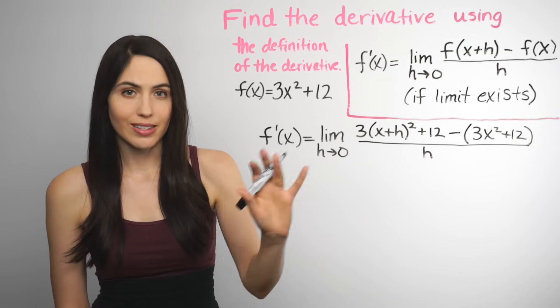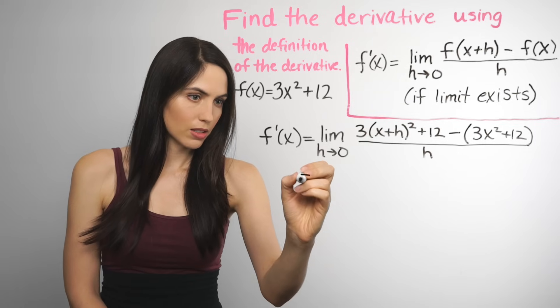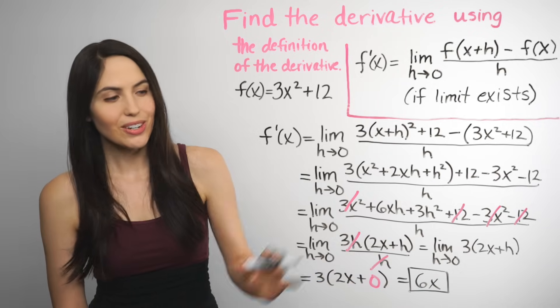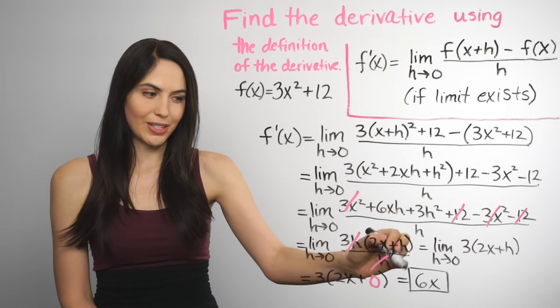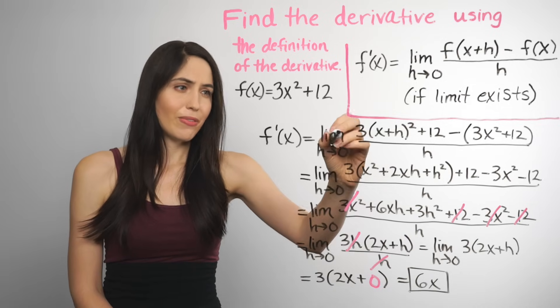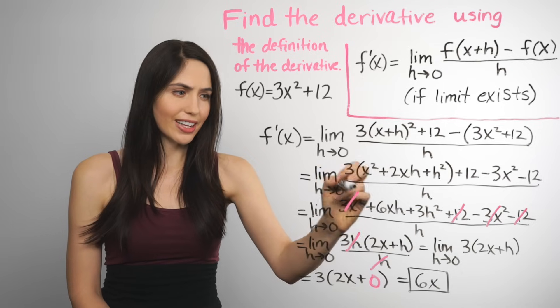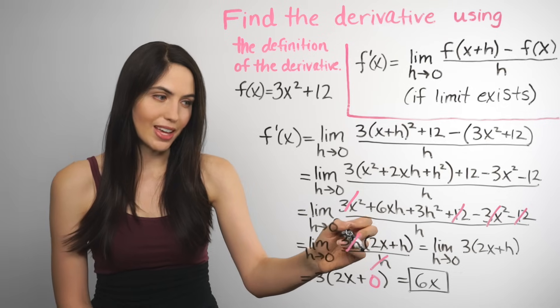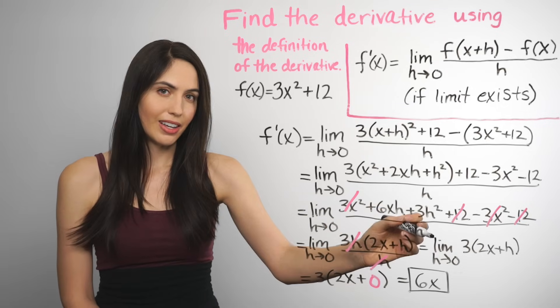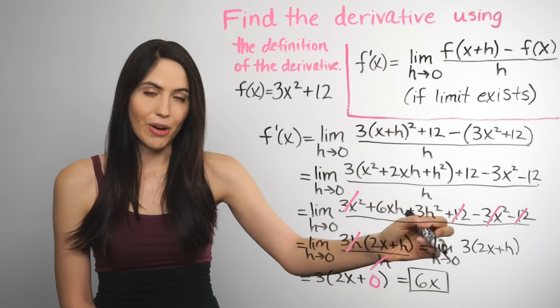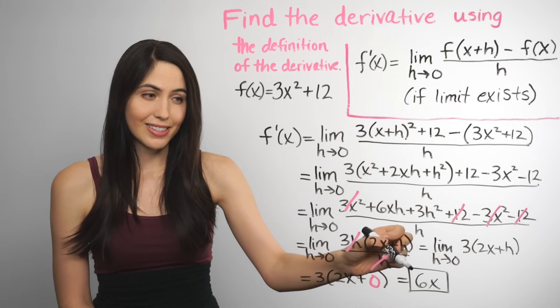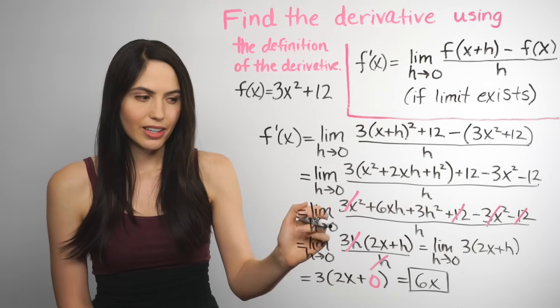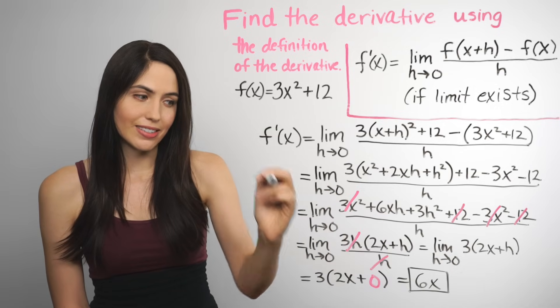Now we can just do some algebra and simplify. Okay, so here's all the work to find the derivative. Our answer was 6x, but in the work I foiled, I distributed, I factored, I canceled terms. At one point I factored out an h so that it would cancel with the bottom h. And in the end I took the limit, and I was able to take the limit by plugging in 0 for h. And I got 6x, which is a beautiful, simple result. After all that work in algebra, the derivative is just 6x. f prime of x is 6x.